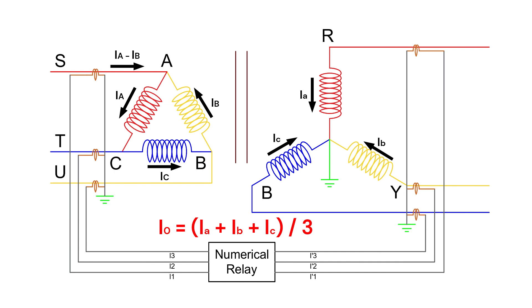The relay then subtracts this zero-sequence current, I0, from the phase current input. So if the CT input to the relay is Ia, the relay uses Ia minus I0 for differential calculation. For example, if the fault current is 100 amperes and the zero-sequence current is I0 amperes, then after filtering, the relay will receive 100 minus I0 amperes on both the star and delta sides. This means there is no differential current, and the relay remains stable during through faults.